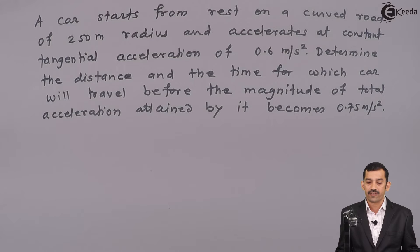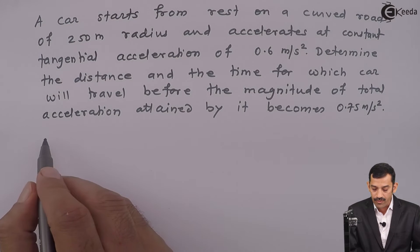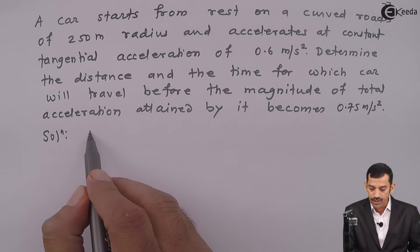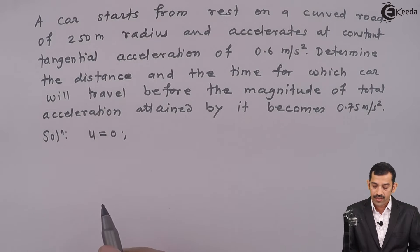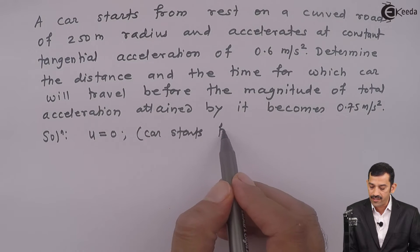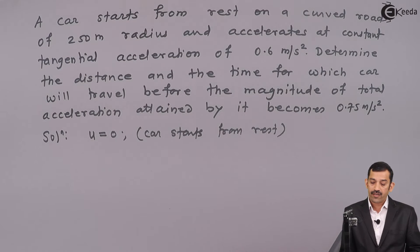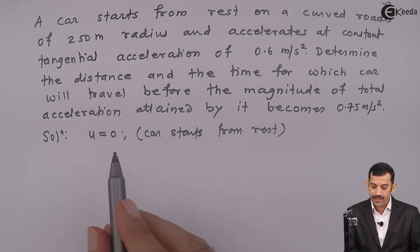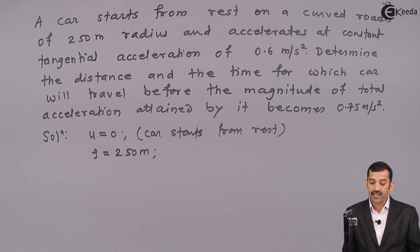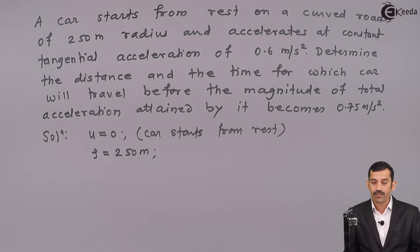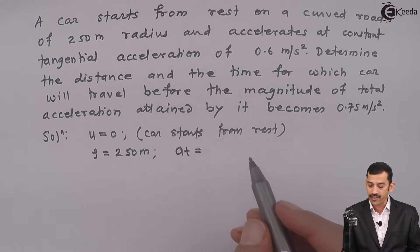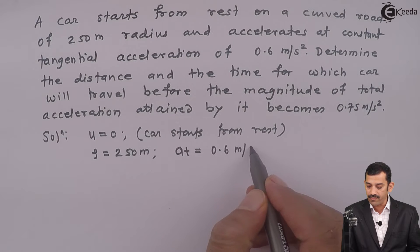Let's note down what is given in the problem one by one. First, the car starts from rest, meaning the initial velocity u is 0. The car travels along a curved road of 250 meter radius, so the radius of curvature rho is 250 meters. It accelerates at a constant tangential acceleration, so the tangential component of acceleration AT is 0.6 meters per second square.